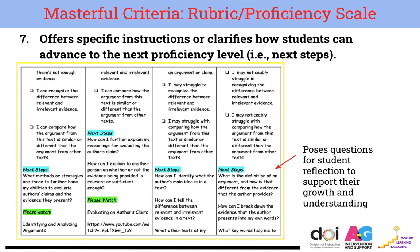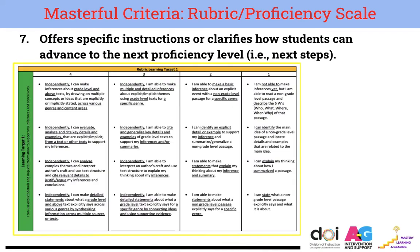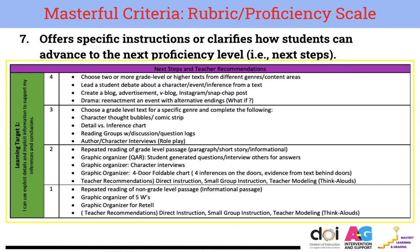You'll notice that in this rubric, right underneath the descriptors, the teacher has highlighted next steps, and these next steps have been provided to the student in the form of reflective questions. In a separate example, the teacher has provided the student with the learning target and the rubric, as well as next steps or teacher recommendations that are appropriate and specific for each of the proficiency levels.